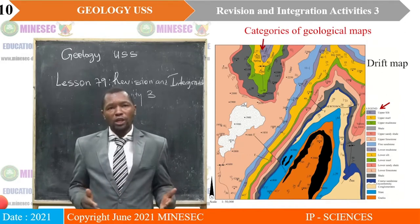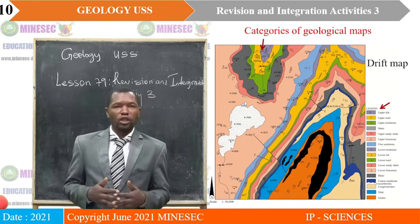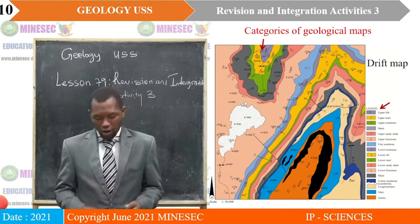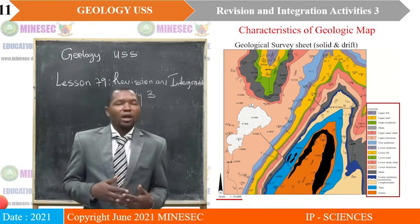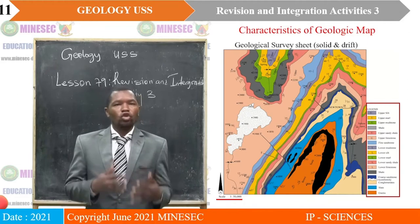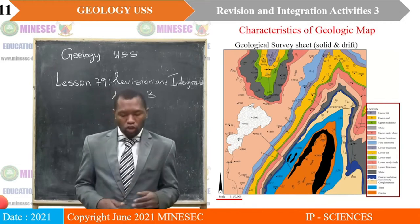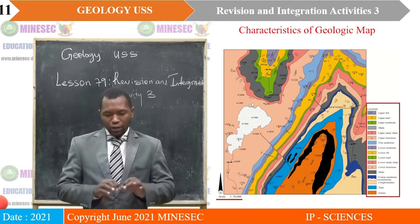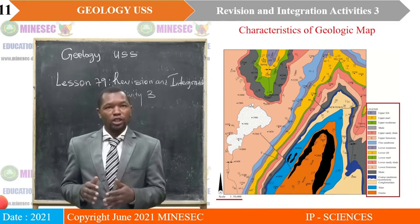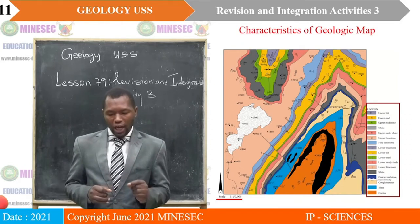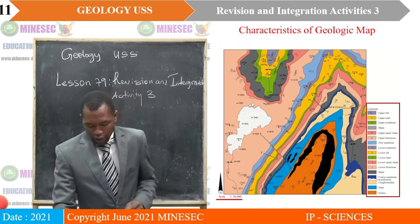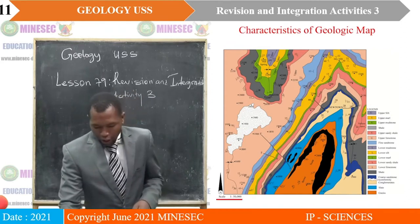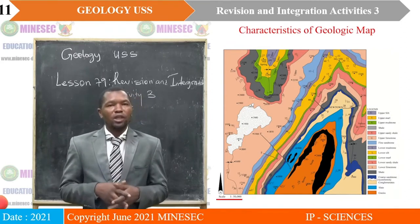We looked at the characteristics of geological maps. We said any geological map must have a key or a title — what is blinking is the title of this map: 'Geological Survey Sheet' in brackets 'solid and drift.' Then we said a geological map must have a scale, and a good geological map must also have a column — the key or the legend.